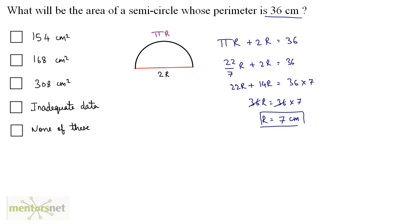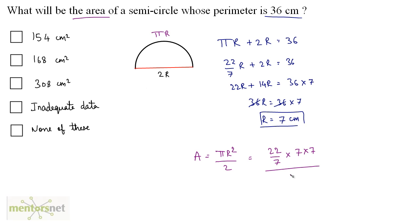Now that we have the value of R, we can calculate the area of the semicircle. The area of a semicircle is half the area of the full circle: πR²/2. This equals 22/7 × 7 × 7 / 2. The 7s cancel, giving 22 × 7 / 2, and since 2 × 11 = 22, we get 11 × 7 = 77 cm². However, none of the provided options have 77 cm², so none would be the appropriate choice.